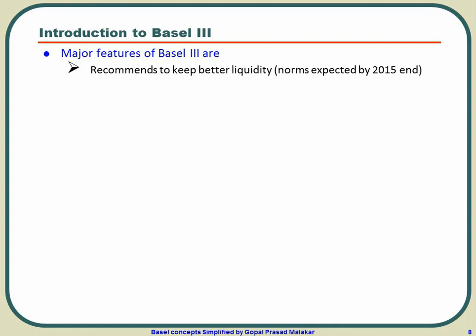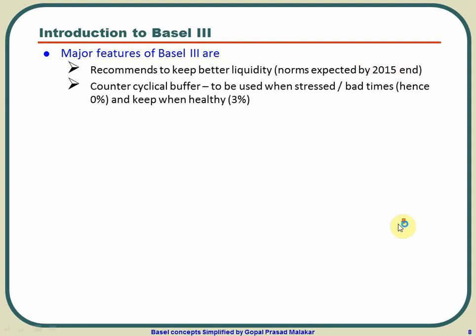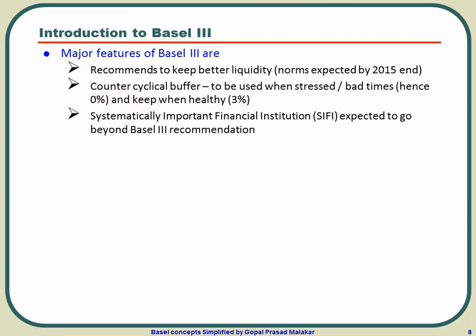BASEL 3 recommends better liquidity ratios, with norms expected by 2015. It also introduced a new term called the counter-cyclical buffer. During stress or bad times, this buffer can be kept at 0%, but when you are healthy you should keep it at a minimum of 2.5% so that you have the ability to absorb losses and shocks during bad times — that is why it is called counter-cyclical. Additionally, systemically important financial institutions, those big institutions where instability could mean instability for the whole industry, are expected to go much beyond BASEL 3 recommendations.